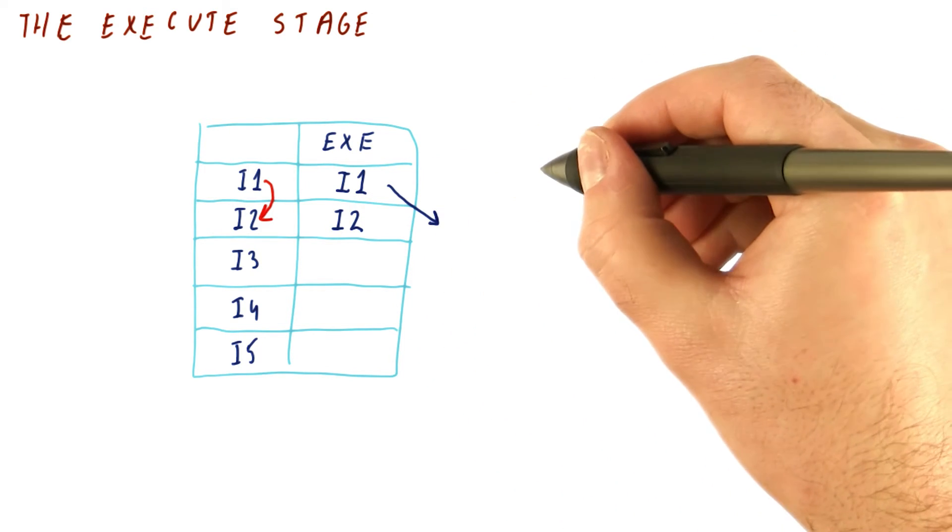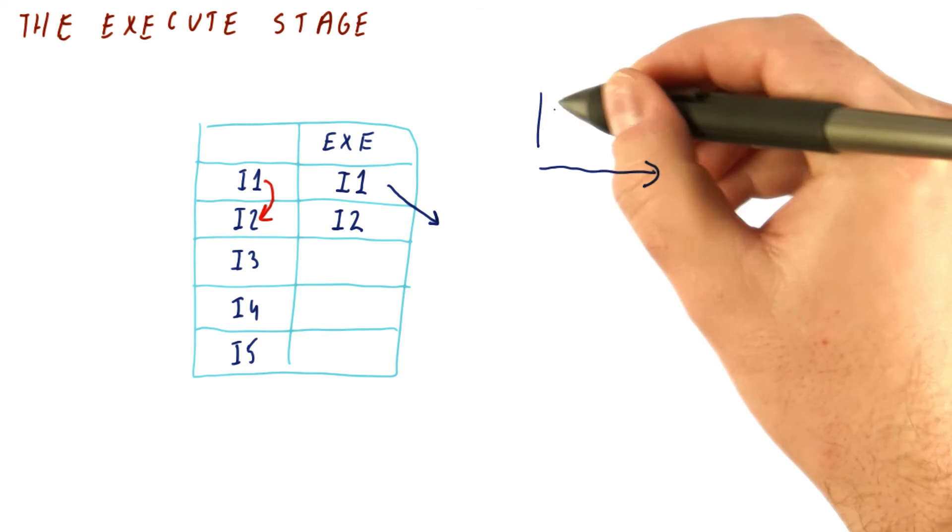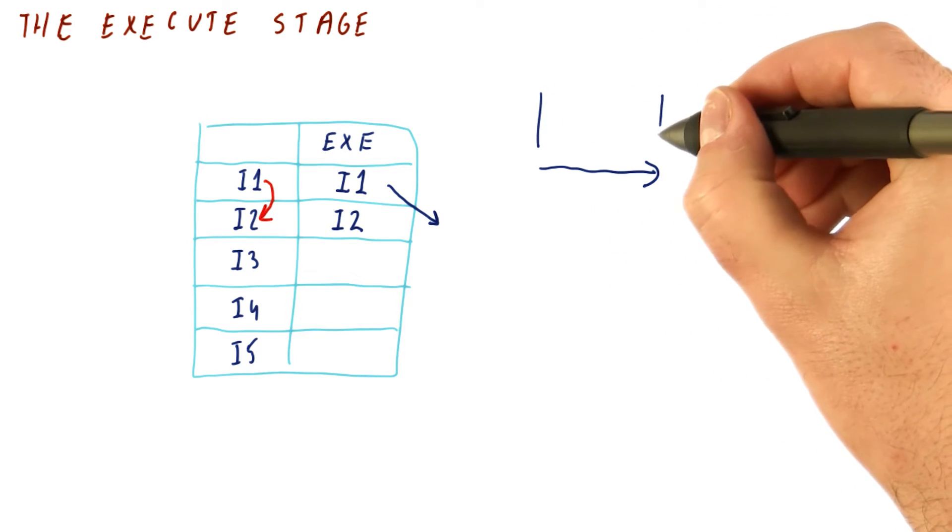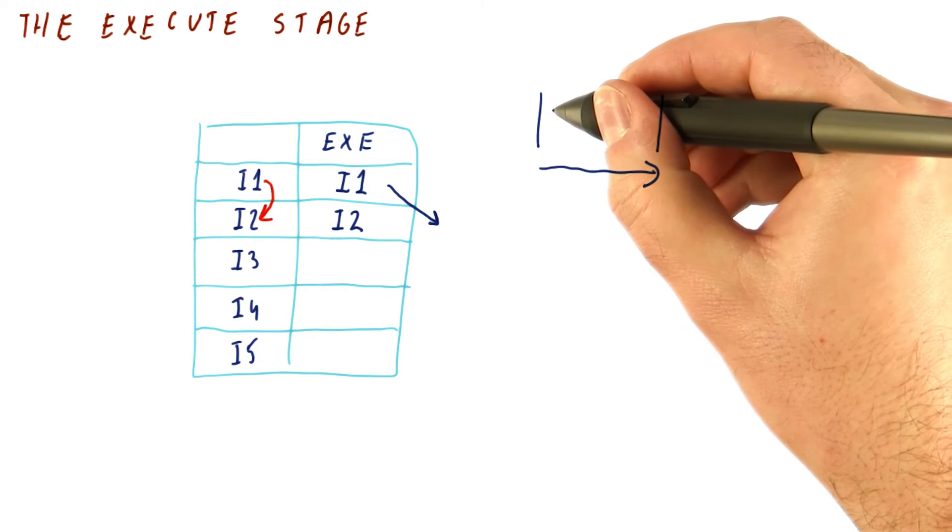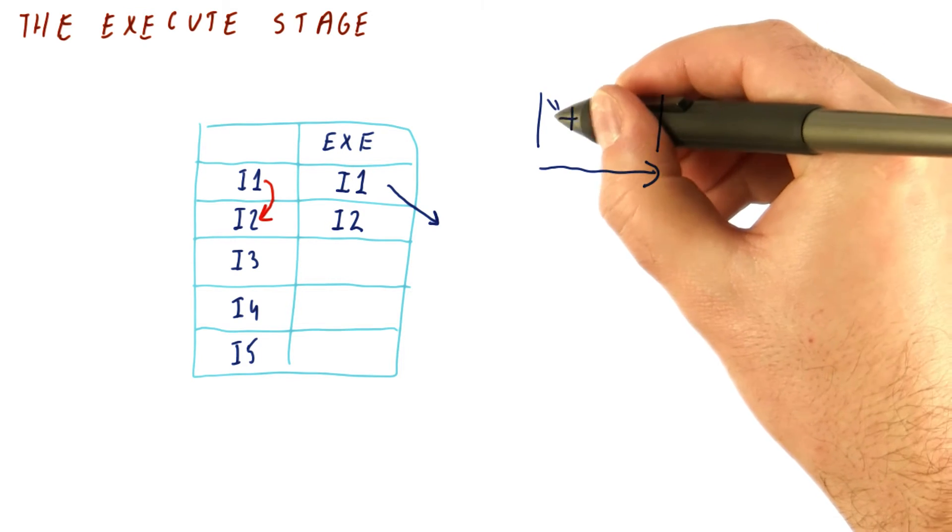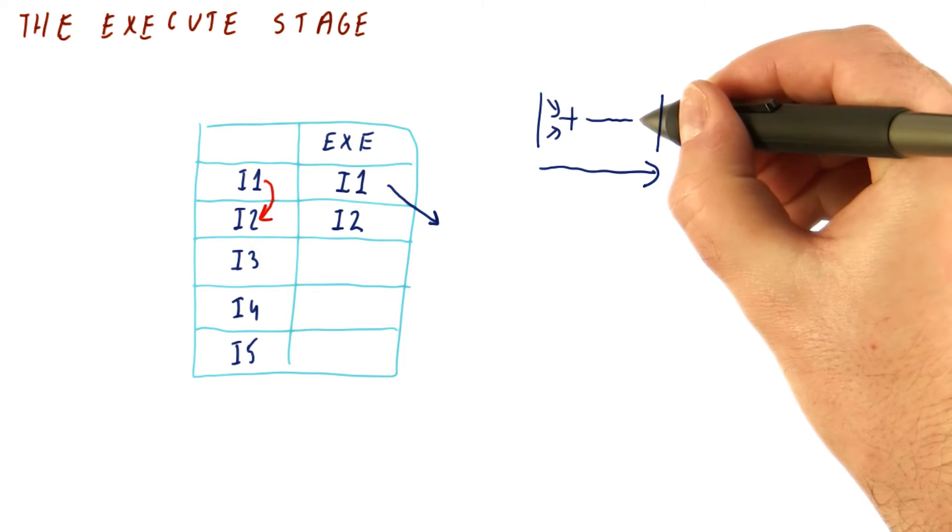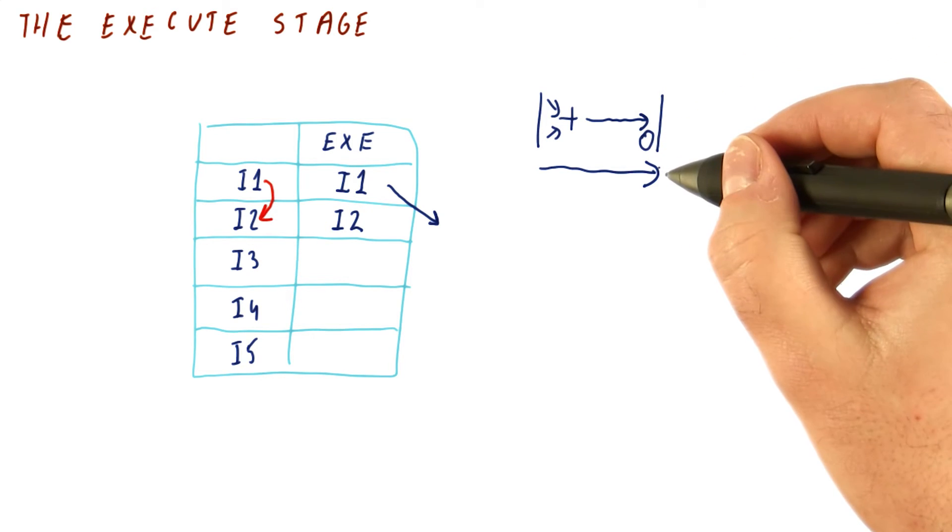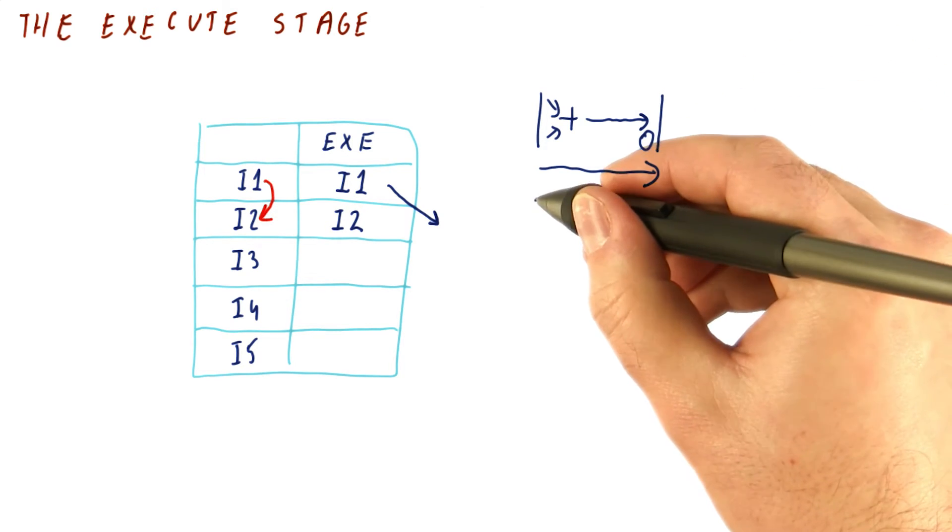If you look at the timeline for the cycle, this is the beginning of the execute stage, this is the end of the execute stage. In here somewhere we are taking two values, operating on them, producing a result. This result is available here at the end of the cycle.